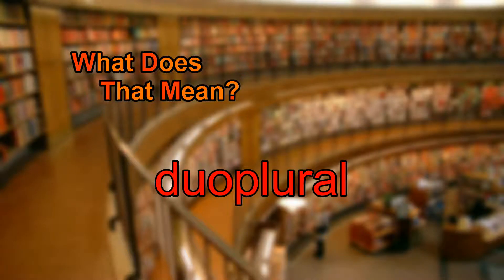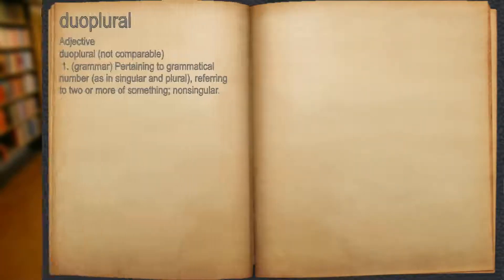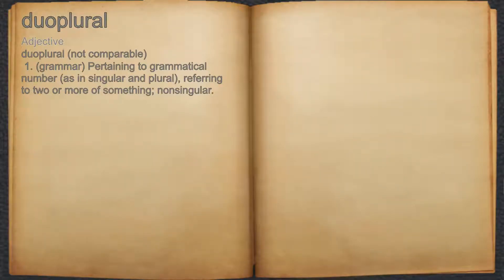What does duoplural mean? Duoplural. Adjective. 1. Grammar: pertaining to grammatical number, as in singular and plural, referring to two or more of something; non-singular.